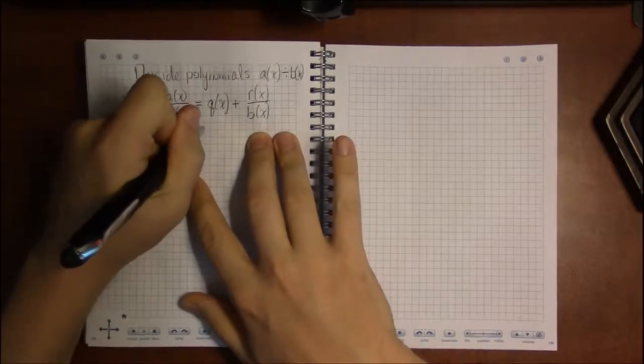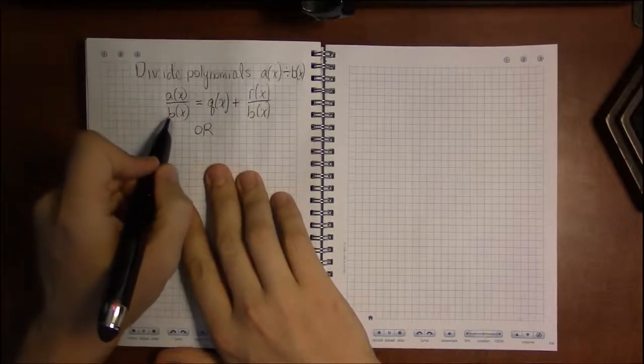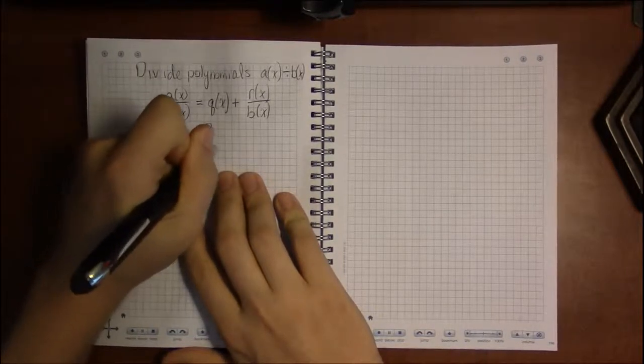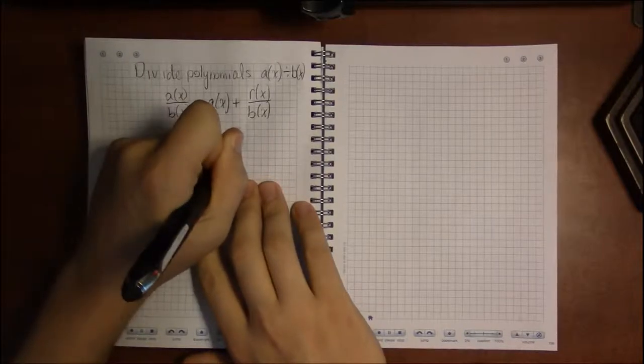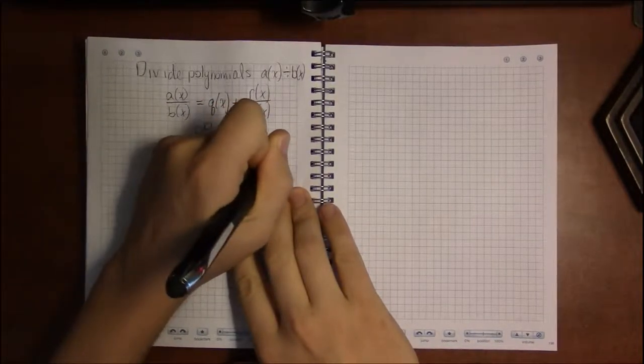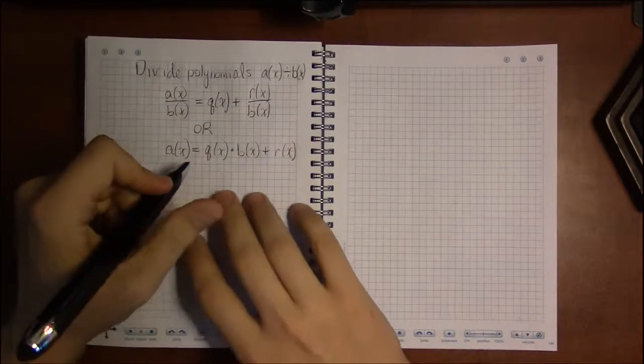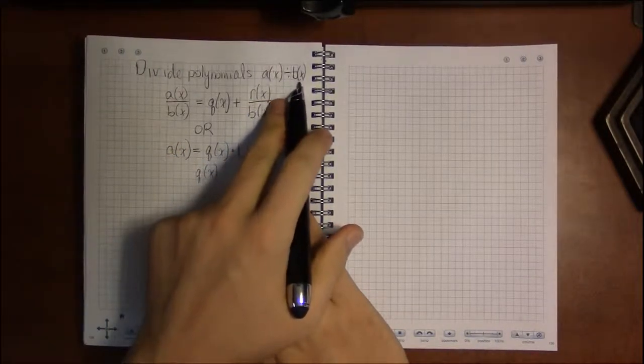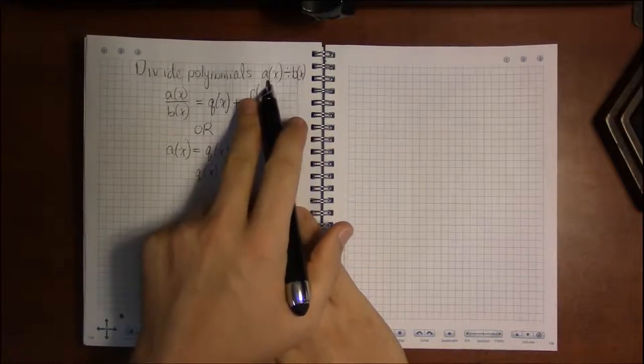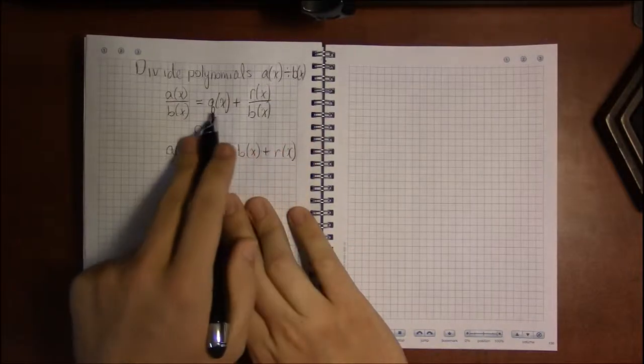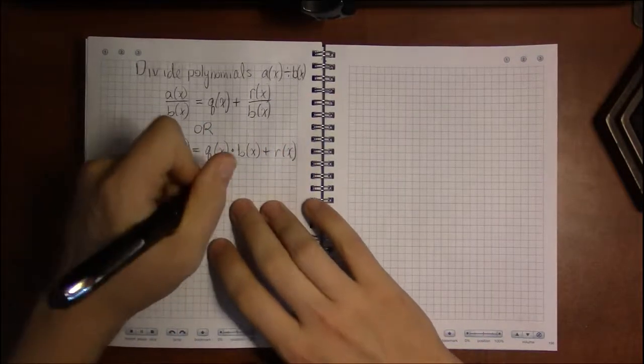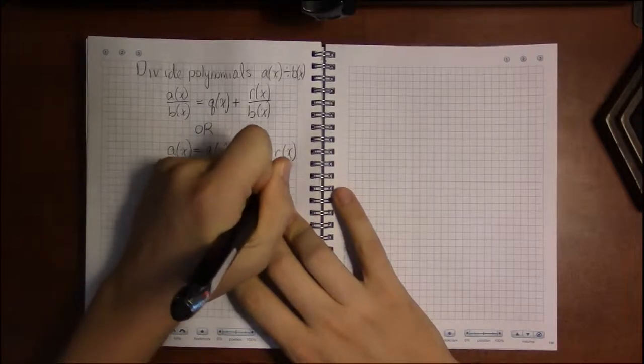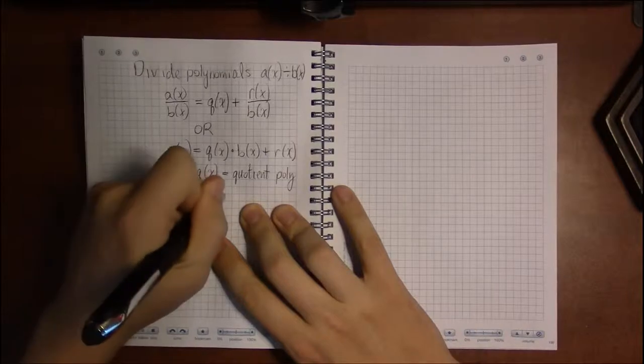And the other way, perhaps the more useful way of writing this, would be to multiply both sides by B of X. So we have the polynomial A of X is the quotient polynomial Q of X times B of X plus a remainder. So now our quotient and remainder are polynomials, just like instead of A and B being numbers, A and B are polynomials. If A and B become polynomials, then Q and R become polynomials as well.